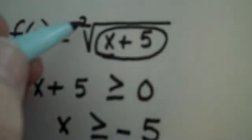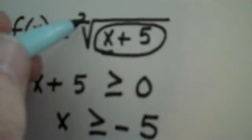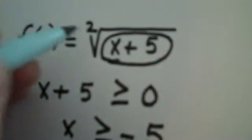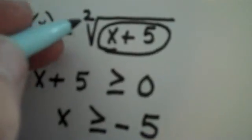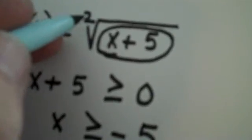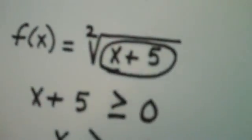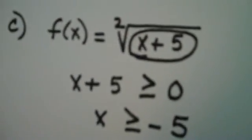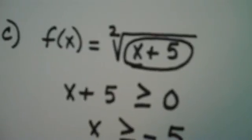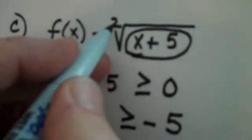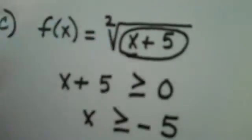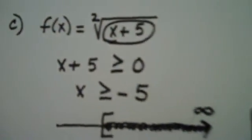Now, if the index were an odd index, for example, pretty much commonly in our class we've dealt with index 2 or index 3. If the index were a 3, there would be no real restrictions for under the radical because you can take the cube root of a positive number, of a negative number, or of 0. So it's index 2 in this course that we're mainly worried about. Okay, have a good day. Study, enjoy, make sure you're ready for the final.